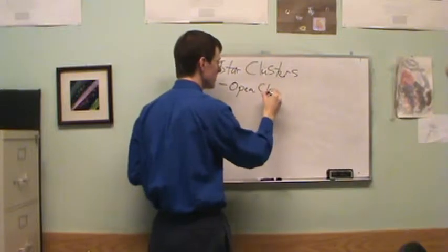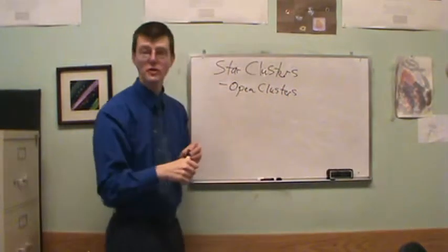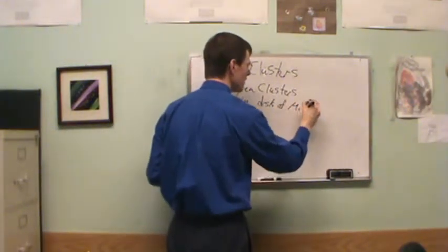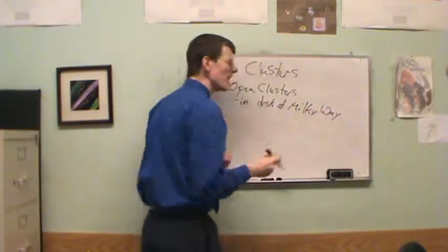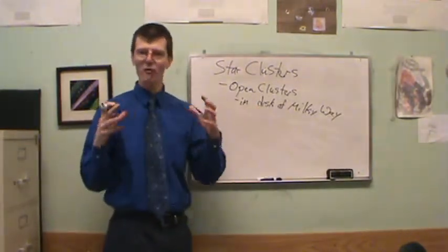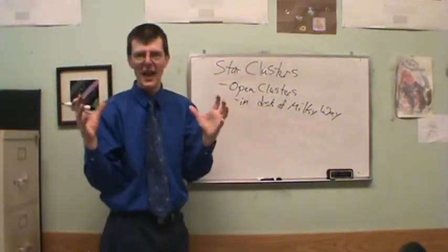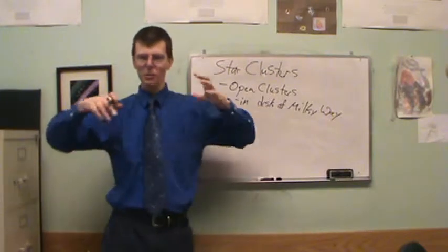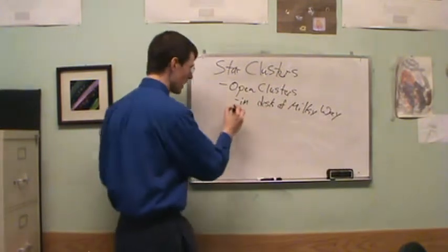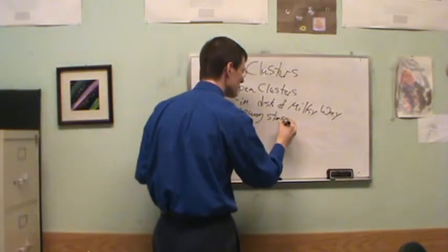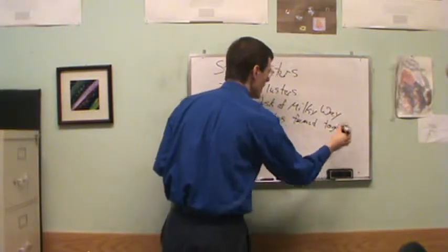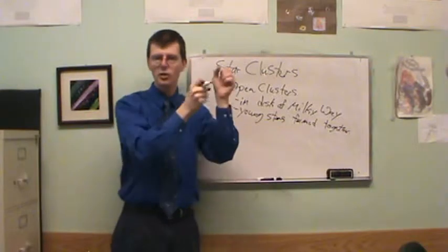First, there are open clusters. An open cluster of stars is within the disk of our galaxy, in the disk of the Milky Way. This is a group of young stars that all form together — relatively young in terms of stellar lifetimes — and they all form at the same time out of the same great big cloud of gas and dust. When you make stars, you don't make one or two — you make hundreds or thousands at once.